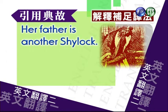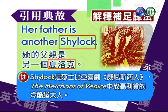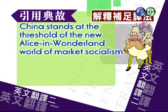Her father is another Shylock. 他的父亲是另一个夏洛克。谁是夏洛克呢？我们要做注释。夏洛克Shylock是莎士比亚喜剧威尼斯商人The Merchant of Venice中一个放高利贷、冷酷的犹太人。好，我们看下面：China stands at the threshold of the new Alice in Wonderland world of market socialism.